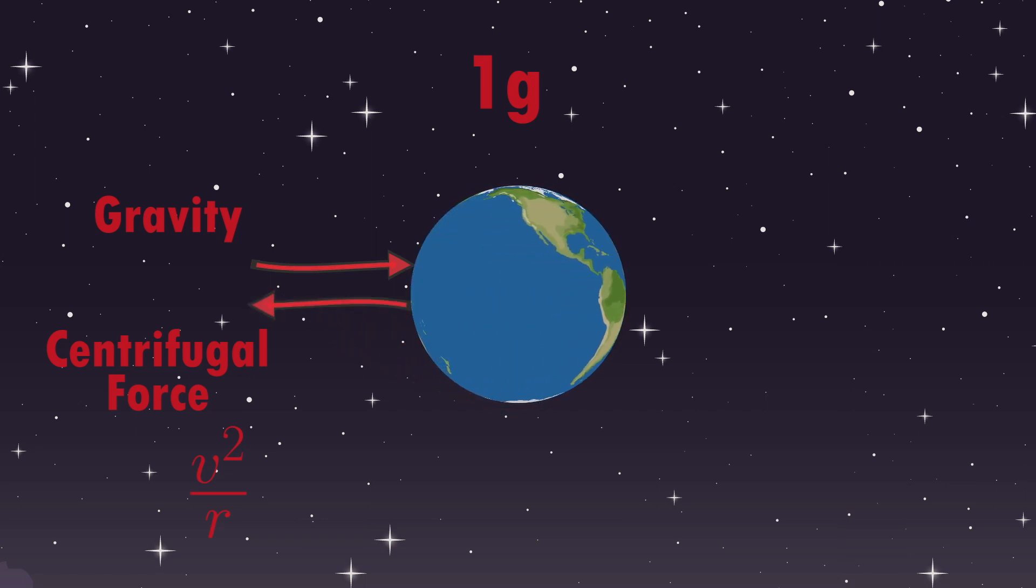For a rotation once a day at the equator, the acceleration due to rotation is 0.003g, much lower than gravity.